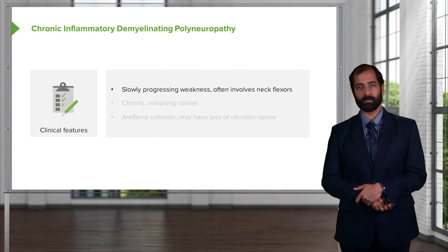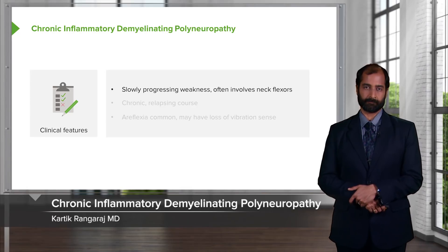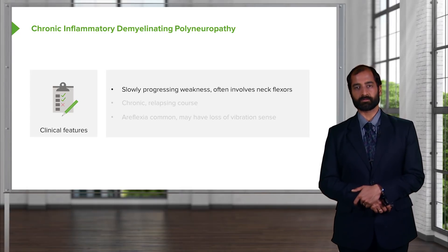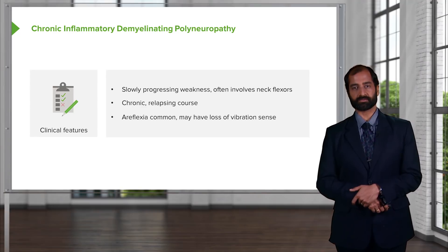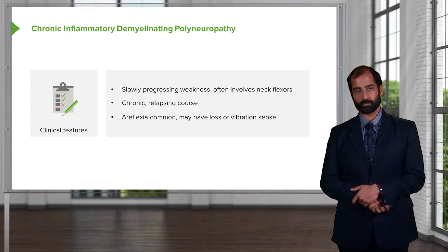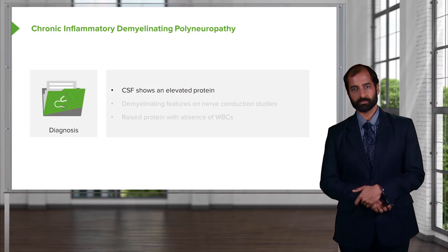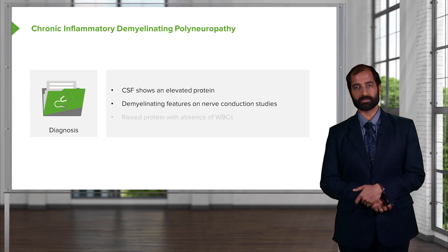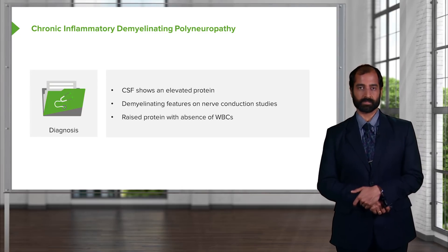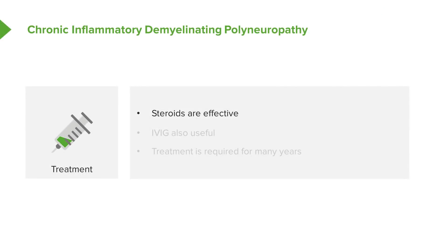Chronic inflammatory demyelinating polyneuropathy, CIDP, is the opposite of Guillain-Barré. It is a chronic, slowly progressing weakness that often involves neck flexors, with a chronic relapsing course. Areflexia is common, and there may be loss of vibration sense. Diagnosis: again, elevated protein on CSF, abnormal nerve conduction test, raised protein with absence of WBCs. Management: steroids are effective here, unlike in AIDP. IVIG is also useful. Management is required for many years given the chronic nature.